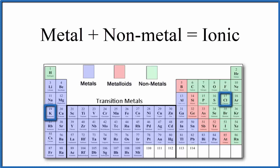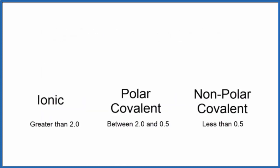The other way we can tell is to look at the difference in electronegativity between the atoms. If it's greater than 2.0, it's ionic. If it's less, it'll be covalent.